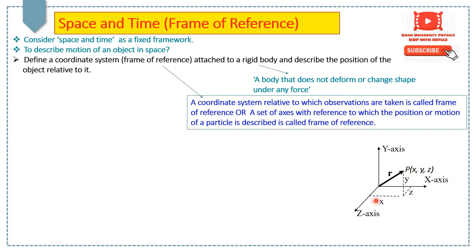Here, you can see x, y, and z are set of axes, with reference to which if you have a particle at point p, then you can describe the position of that particle with respect to the origin of this system.